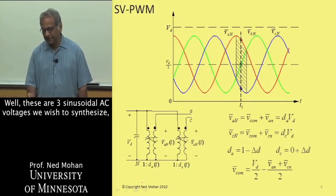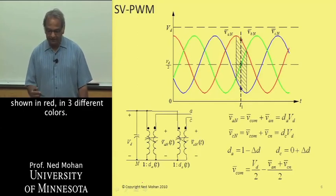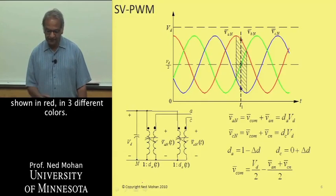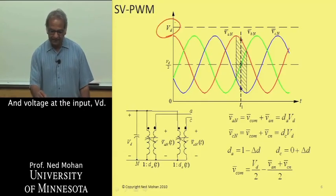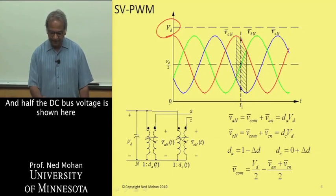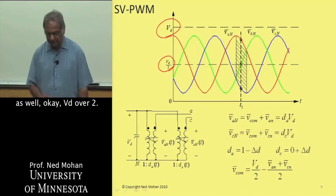These are the three sinusoidal AC voltages we wish to synthesize shown in red in three different colors. There's a voltage at the input VD, and VD over two, half the DC bus voltage, is shown here as well.